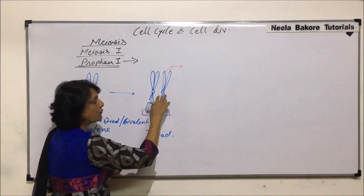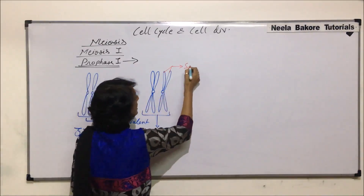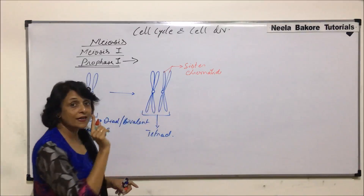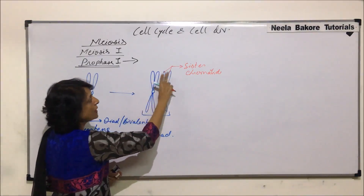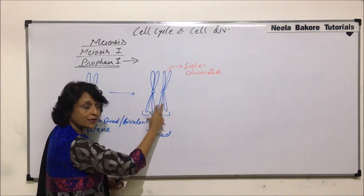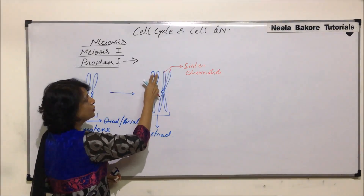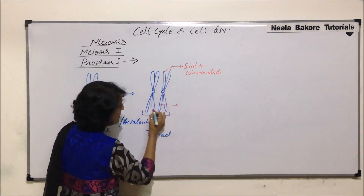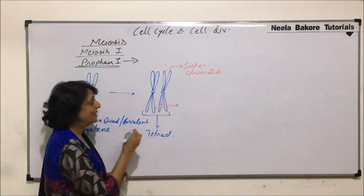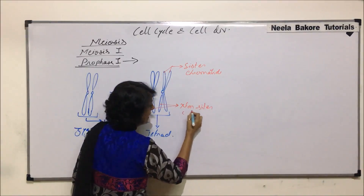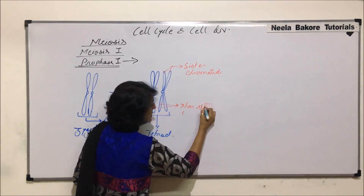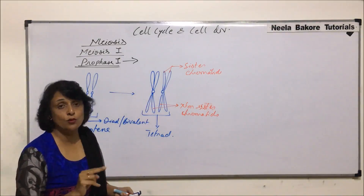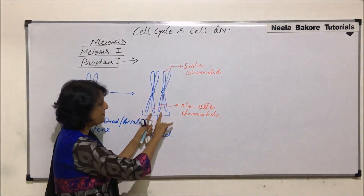Now, if we have to name the two arms of one chromosome, they are called sister chromatids. The arms of one chromosome are called sister chromatids. So these two are sister chromatids; if you are talking of these two, they would also be sister chromatids. But if we talk of one arm from this chromosome and one arm from the other, then they are known as non-sister chromatids.